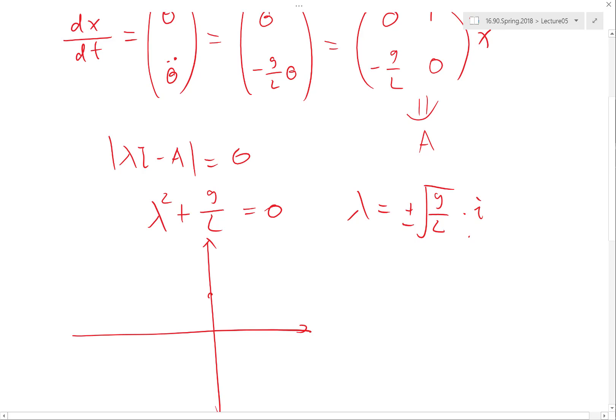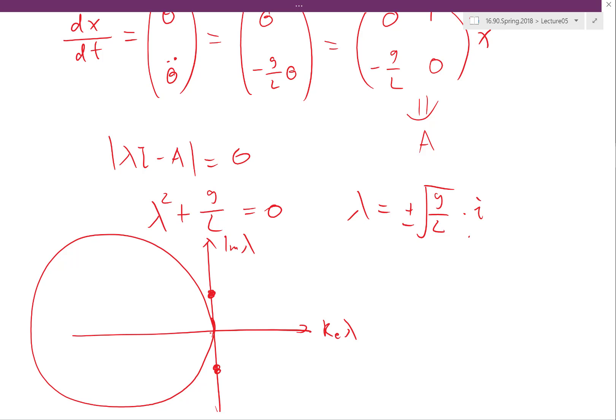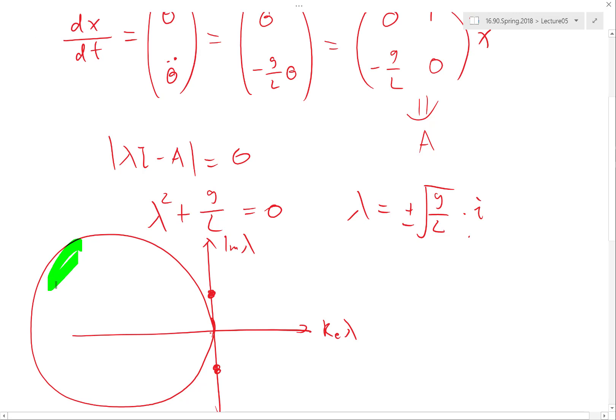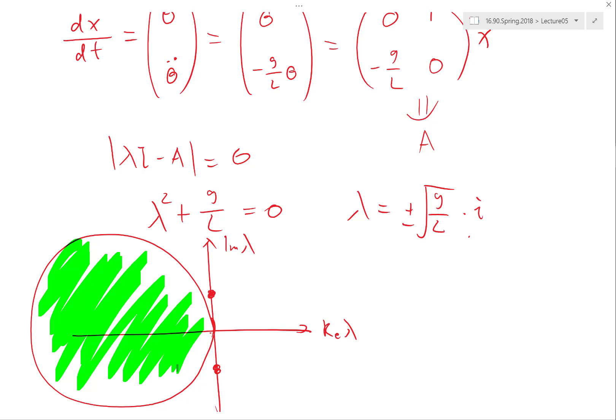So in the imaginary plane, real lambda, you have an eigenvalue here and eigenvalue here. Remember, for forward Euler the stability region is a circle that is tangential to the imaginary axis. So these two points, no matter what delta T you use, are going to be outside the stability region of forward Euler. That's why forward Euler was a terrible scheme for the pendulum system.